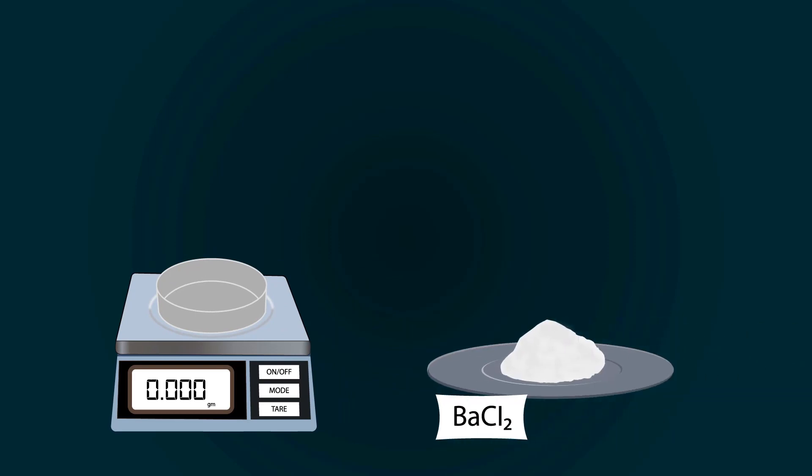Now add barium chloride into the petri dish with the help of spatula. Weigh precisely up to 5 grams.